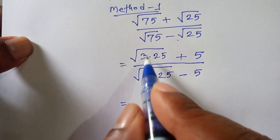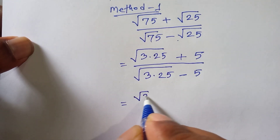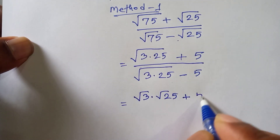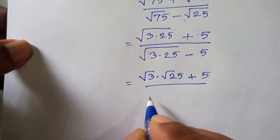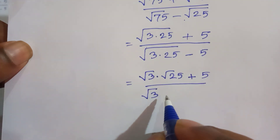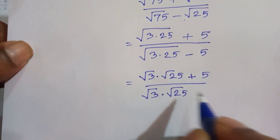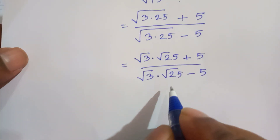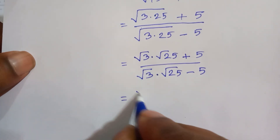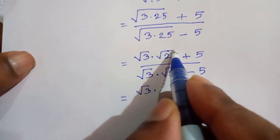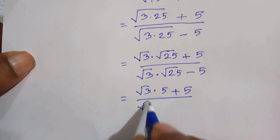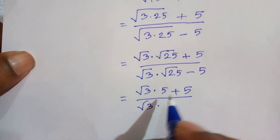Next step, we separate the root so it will be root 3 times root 25 plus 5, over root 3 times root 25 minus 5. Since root 25 is 5, this becomes 5 root 3 plus 5, over 5 root 3 minus 5.